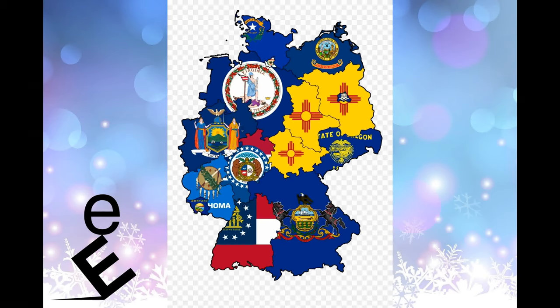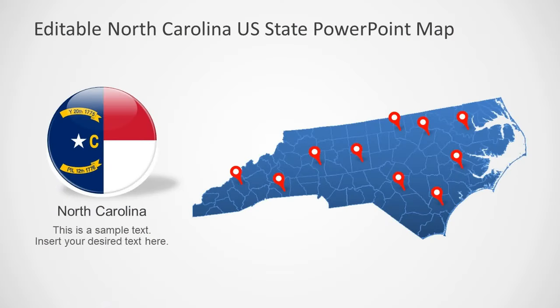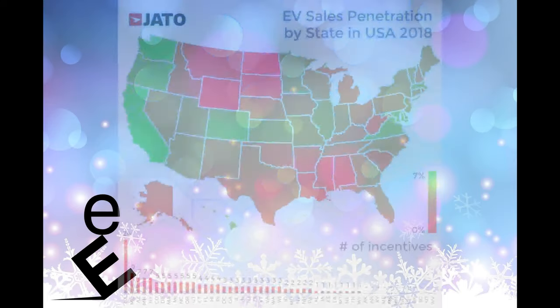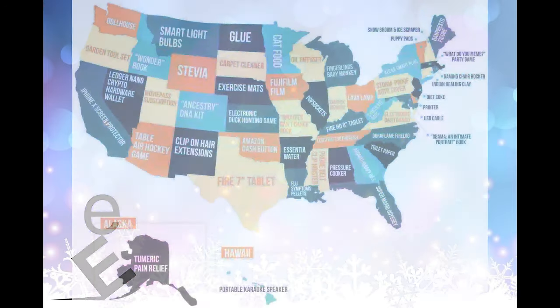The Constitution is silent on the question of whether states have the power to secede from the Union. Shortly after the Civil War, the U.S. Supreme Court, in Texas v. White, held that a state cannot unilaterally do so. The 50 U.S. states, in alphabetical order, along with each state's flag.